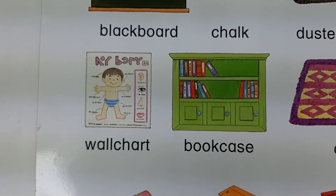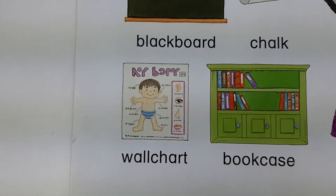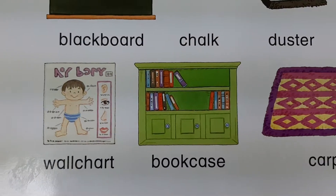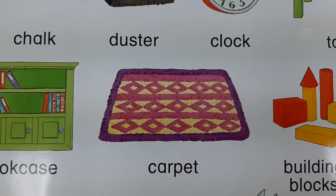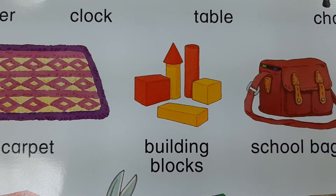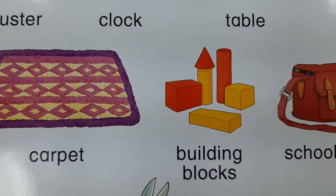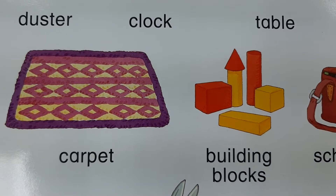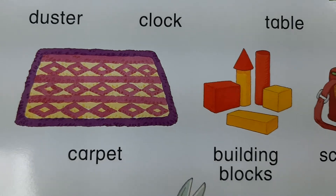Teacher, 이것은 뭐예요? What is this? This is a wall chart. This is a bookcase. This is a carpet. Teacher, 이것들은 뭔가요? What are these? These are building blocks.